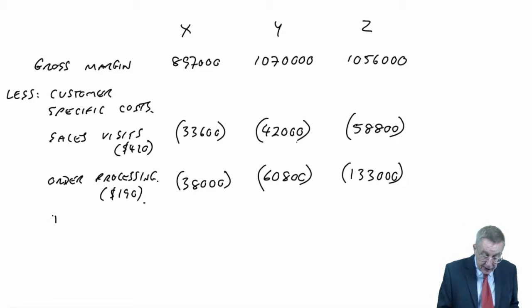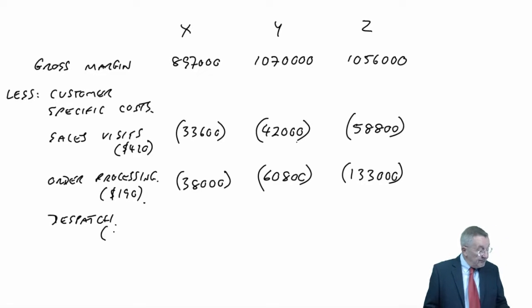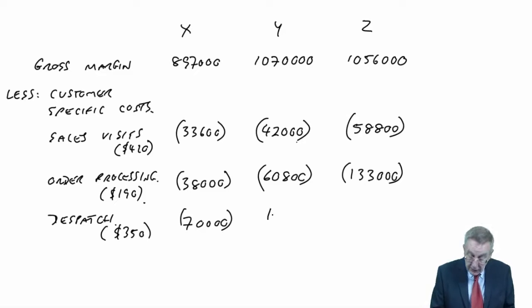Let's quickly finish it off. Next, dispatch costs. It's 350 for every order that's placed. X, 200 orders at 350 is 70,000. Y, 320 orders at 350 is 112,000. And Z, 700 orders at 350 is 245,000.